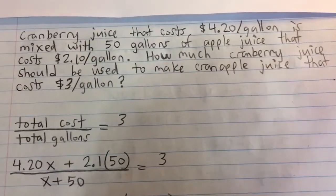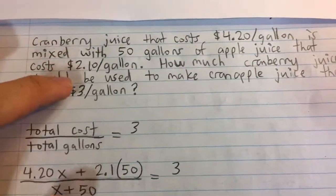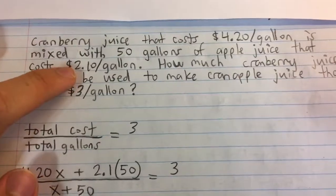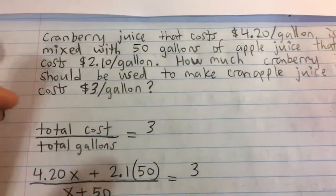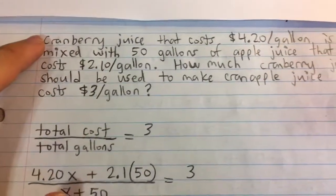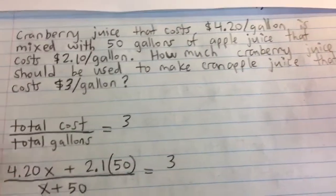First off, let's take a look here. If we add some cranberry juice to the apple juice, it's going to increase the price from $2.10 upwards, right? Because it's $4.20. So we're saying, what's the exact amount of cranberry juice we need in order for the price to be $3 per gallon, the price of the mixture?